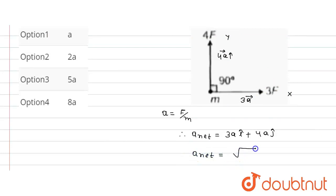Now magnitude of a_net will be under root of coefficient of i cap square means 9a square plus coefficient of j cap square means 16a square. That is equal to under root of 25a square, that is equal to 5a.